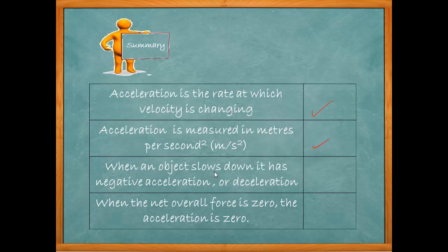When an object slows down, we call that negative acceleration. That should be on the line, not crossed through. Or we call it deceleration. It's deceleration when it's slowing down, negative acceleration.